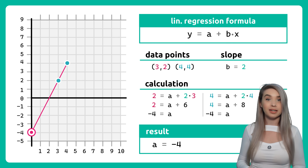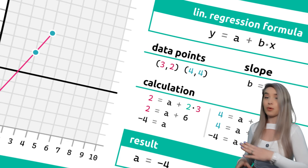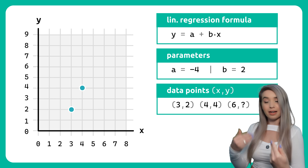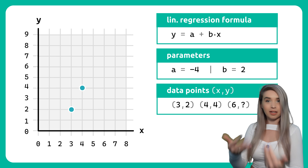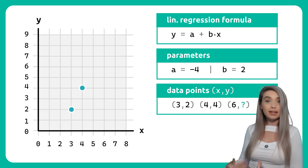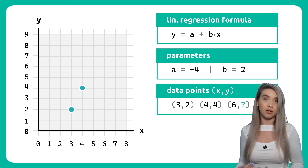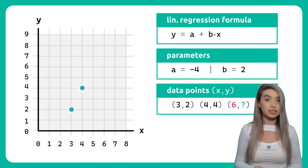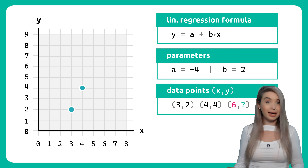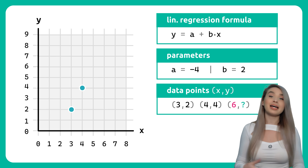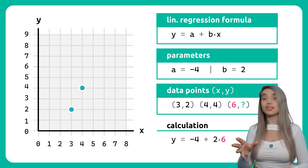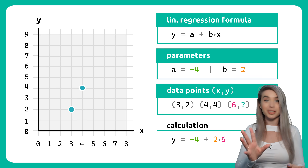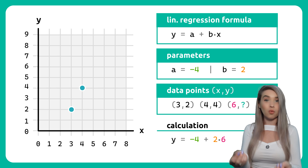Now once we calculate the y-intercept along with the slope, we can use the linear regression formula to discover new data points. So let's go back to our previous example where we have a missing value for y and we only know that it has the x value of 6. In that case, we will plug in the x, the b, and the a into our formula.